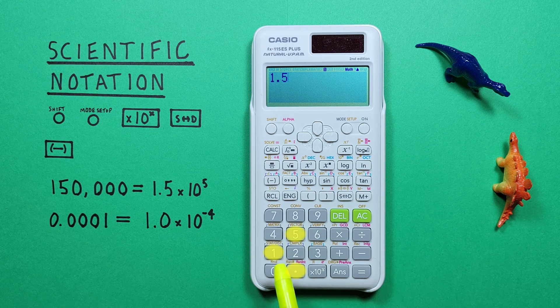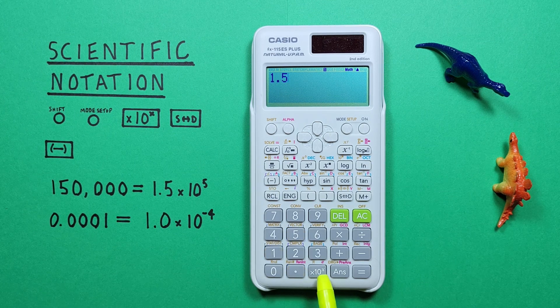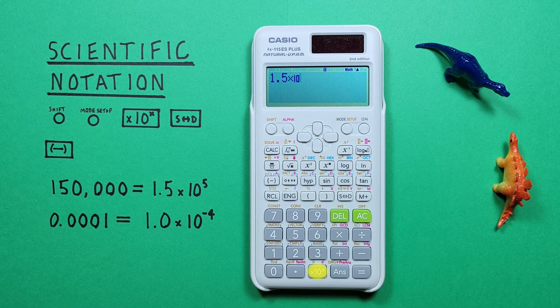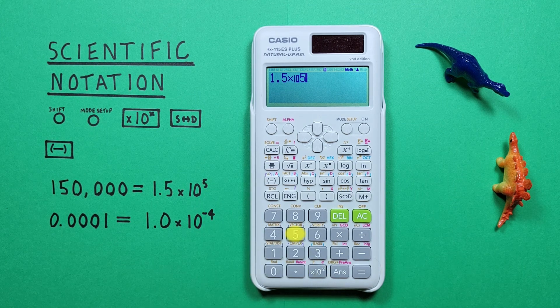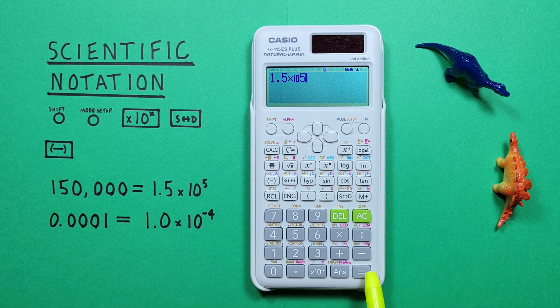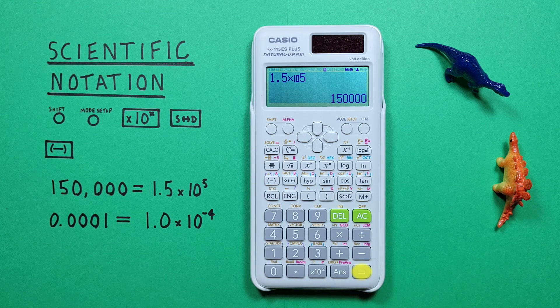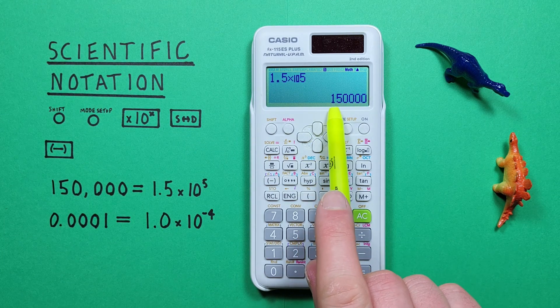1.5. And then we use the times 10 to the power of x key here. And then we enter our exponent, which is 5. And press equals. And we see this is converted to 150,000.